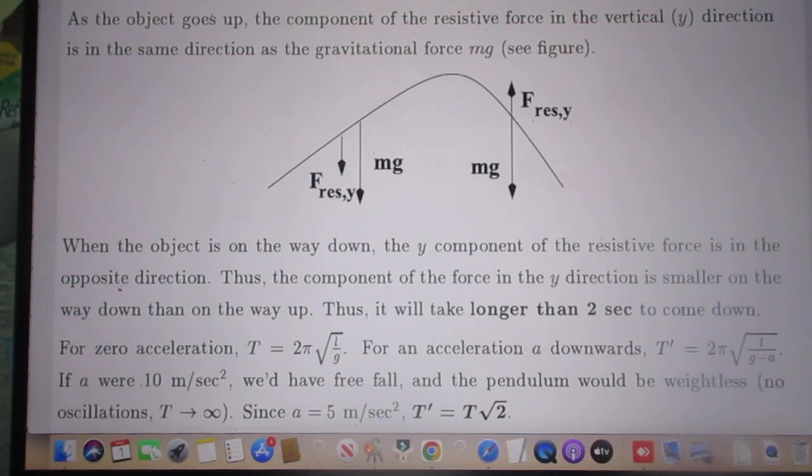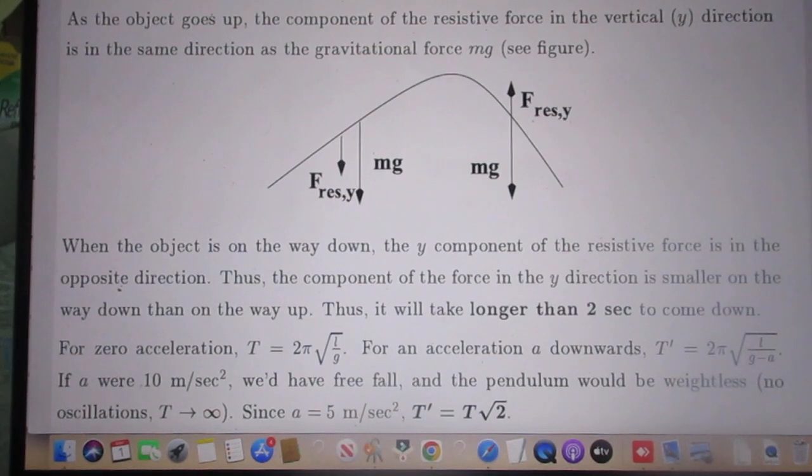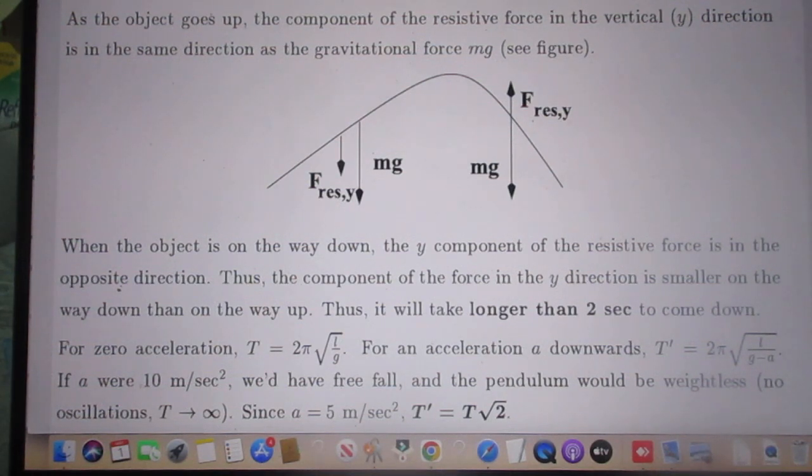We have a pendulum. The pendulum has length L and it is in an elevator. And the elevator is accelerated down with an acceleration A which is 5 meters per second squared. And the question now is what now is the period of that pendulum in comparison with the period of the pendulum if the elevator would not be accelerated at all.